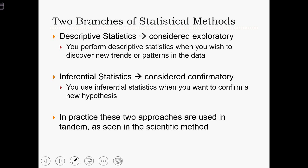Because of the very different nature of these two branches of statistics, descriptive statistics are usually considered exploratory methods. We perform descriptive statistics when we want to discover new trends or patterns in the data. On the other hand, inferential statistics are usually considered confirmatory methods. With inferential statistics, we are usually trying to confirm whether or not some hypothesis is true. We might hypothesize that trees have been declining in height over the last 10 years, so we might use inferential statistics to confirm whether or not that hypothesis is true.